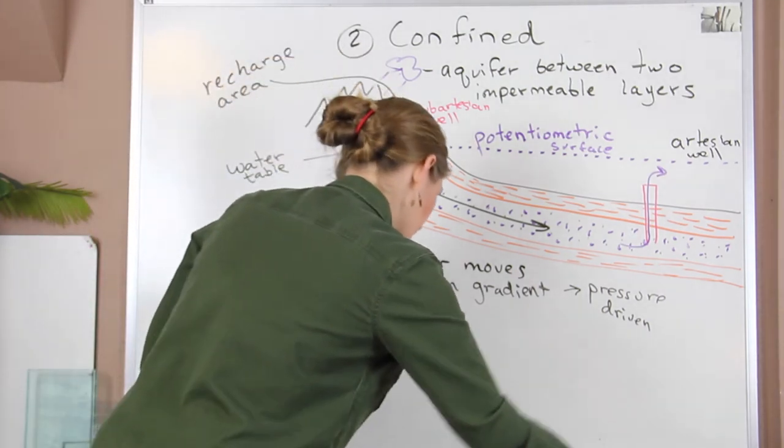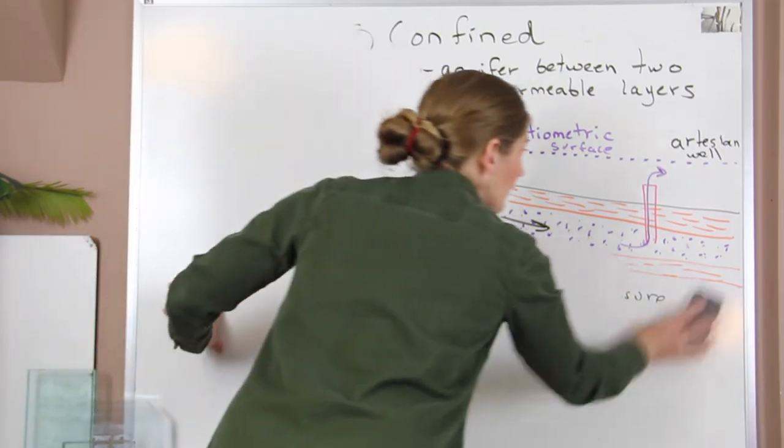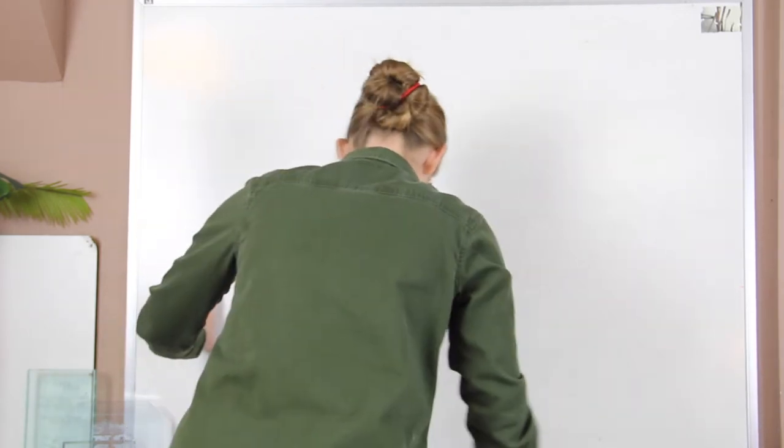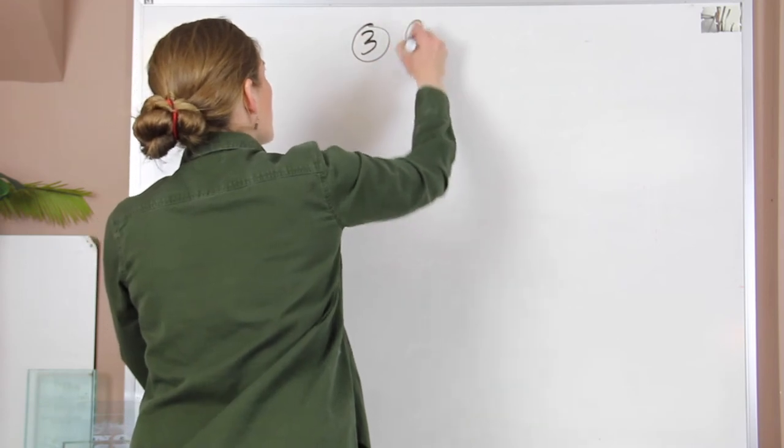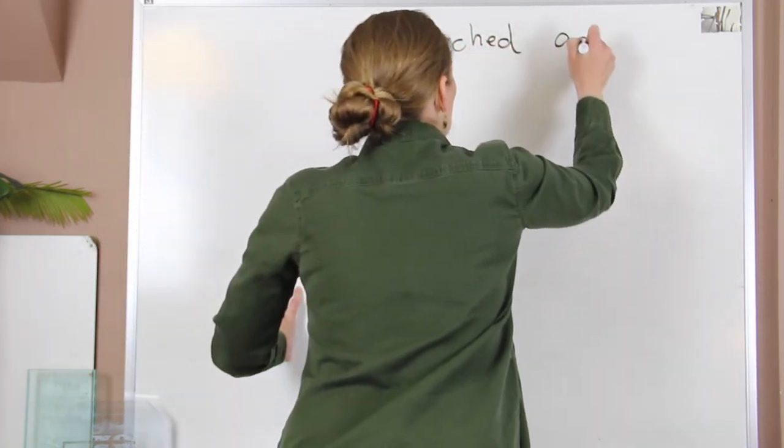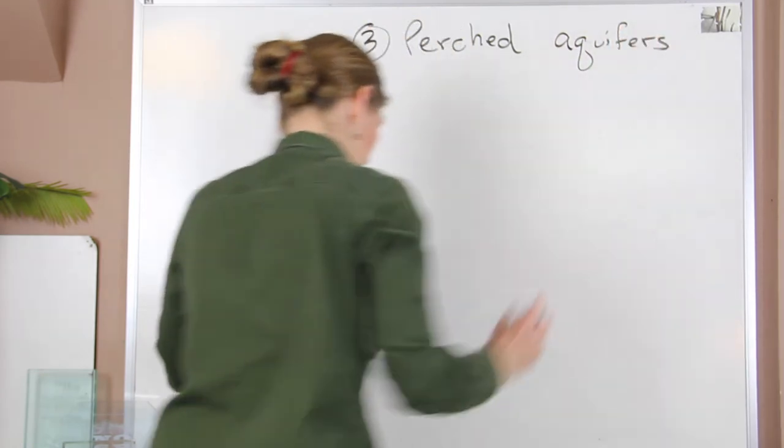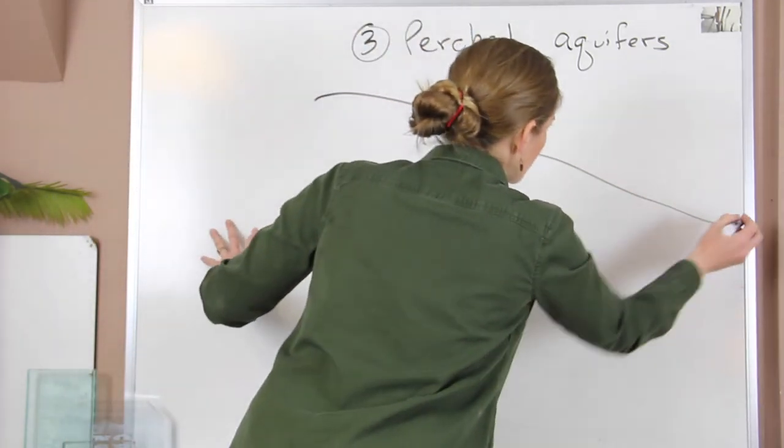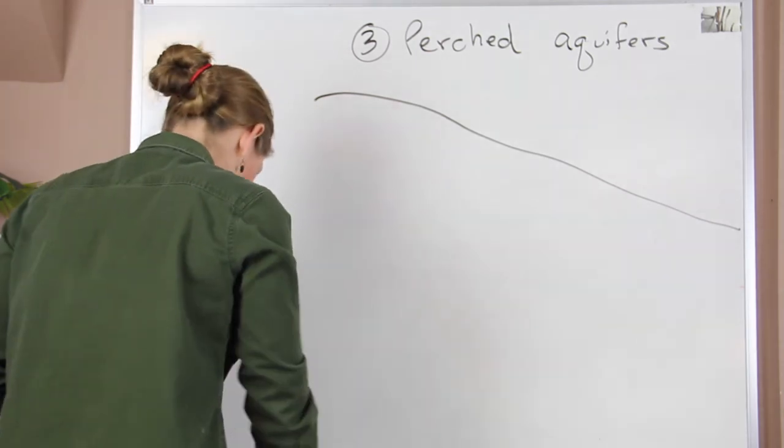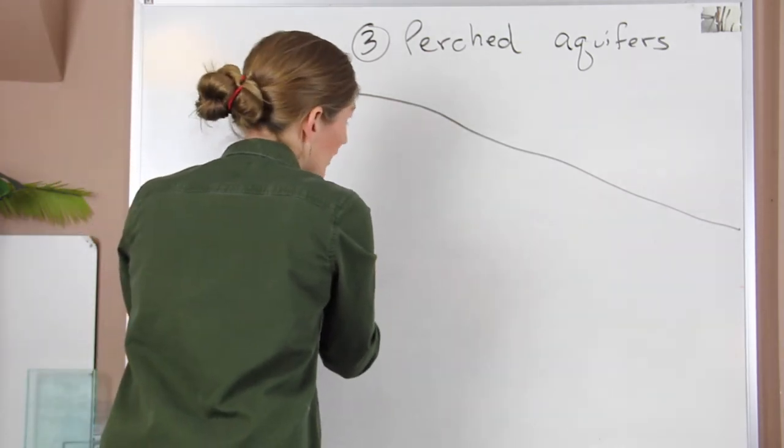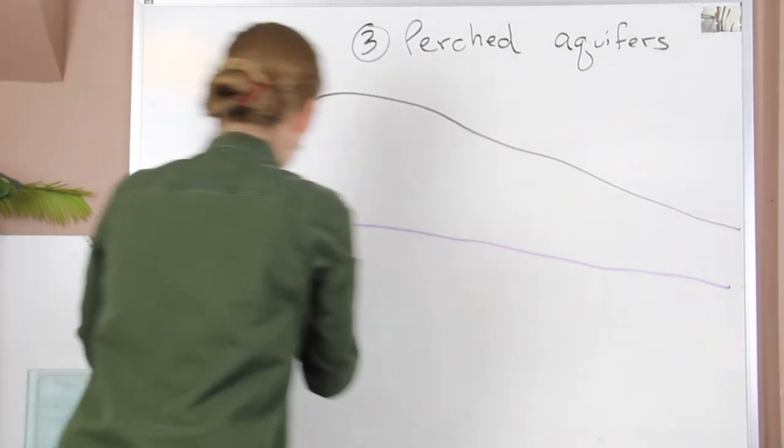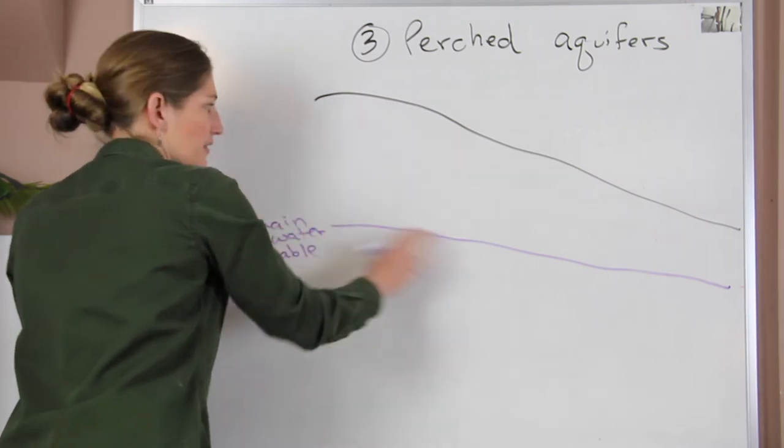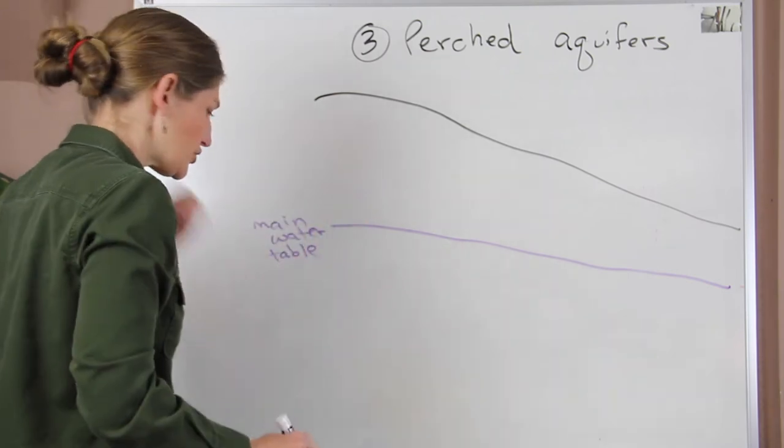All right, so we have one more type of aquifer to look at. And this one is our smallest—generally these are our perched aquifers. Okay, so these are kind of localized areas. And I'm going to draw again a side view, so we'll have our land, and then down below this we will have some point where we have our unconfined main water table. So I'm just going to write 'main water table.' And in this case it's an unconfined, so it's not being constrained by any specific layers.